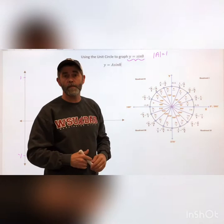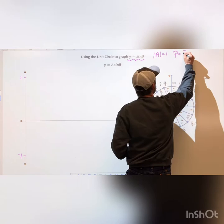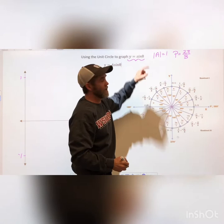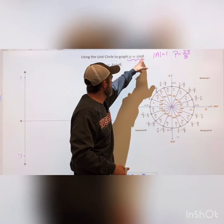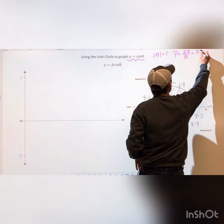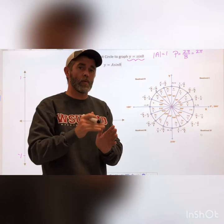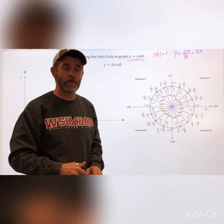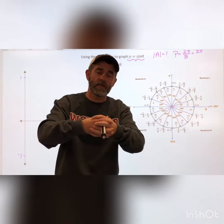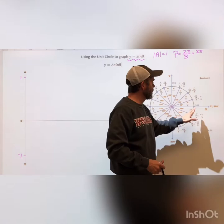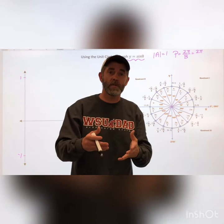The next thing we're going to look at is what is called the period. The period has a formula that says 2π over B. B is actually the number that's going to sit in front of the x or in front of theta — in this case it's also a one. So this would be 2π over one, which is 2π. What the period is indicating is how far are we going to travel to complete one full rotation. One full rotation in the unit circle is 2π, so it's basically saying if I'm using the unit circle to graph the sine function, I'm going to complete one full rotation between zero and 2π.